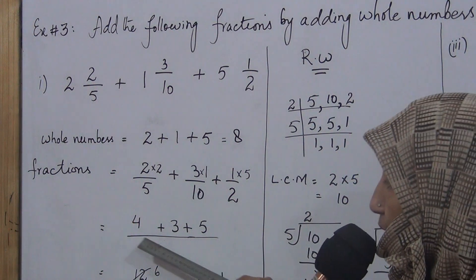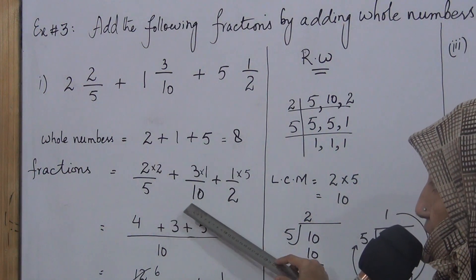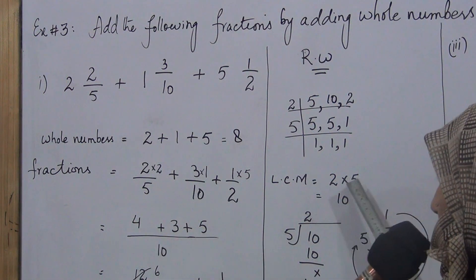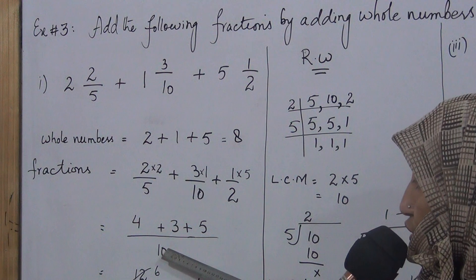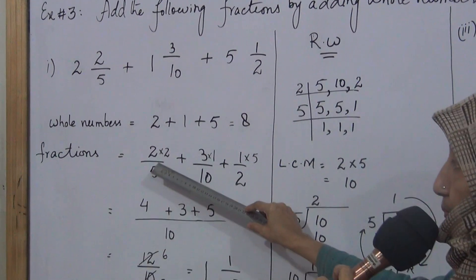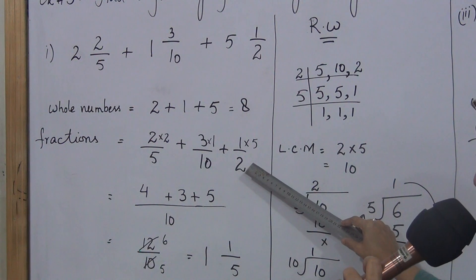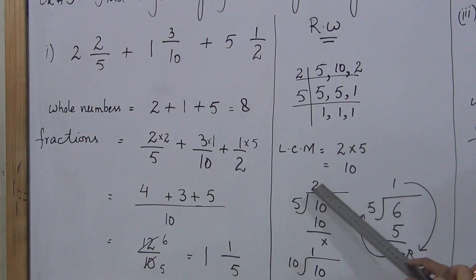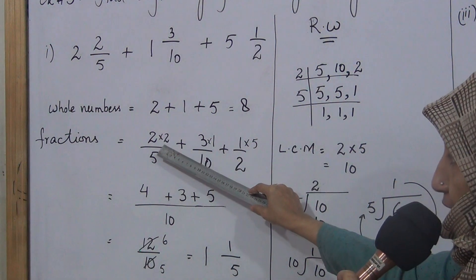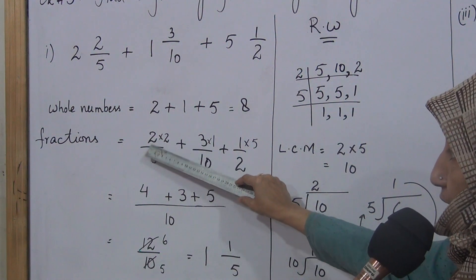We will make 10 the common denominator for the first, second, and third fractions. The original denominators were 5, 10, and 2. Now we divide the LCM by each denominator. For the first fraction, LCM 10 divided by denominator 5 equals 2. This answer multiplies the numerator. Same step for the second fraction: LCM 10 divided by denominator 10 equals 1, which multiplies the numerator.